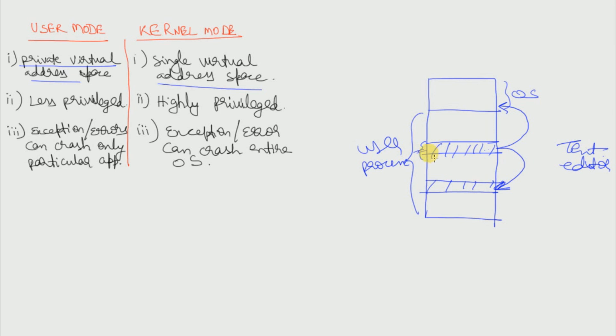While if we see a kernel mode process, suppose we want to write something to our disk, then we call the write system call and that leads to a context switch from user mode to kernel mode. And that kernel then interacts with the hardware and carries out the required operation.